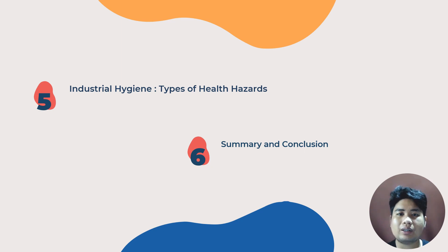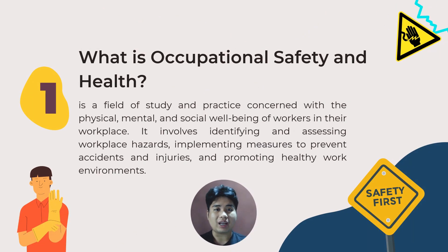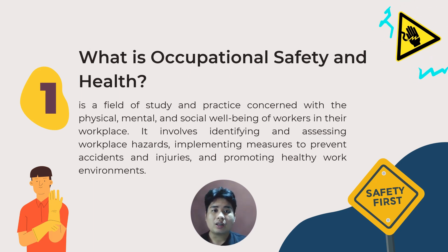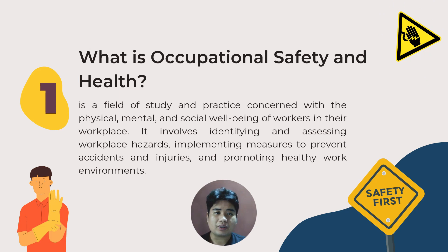We are now on our first agenda: defining what is occupational safety and health, or OSH. It is a field of study and practice that focuses on the identification, assessment, and control of hazards in the workplace or learning environment. It is concerned with ensuring the well-being and safety of workers and students by preventing accidents, injuries, and illness that may arise from their activities. OSH is essential because it plays a significant role in protecting workers and students from harm, helping create a safe and healthy environment where individuals can perform their tasks without being exposed to injuries.